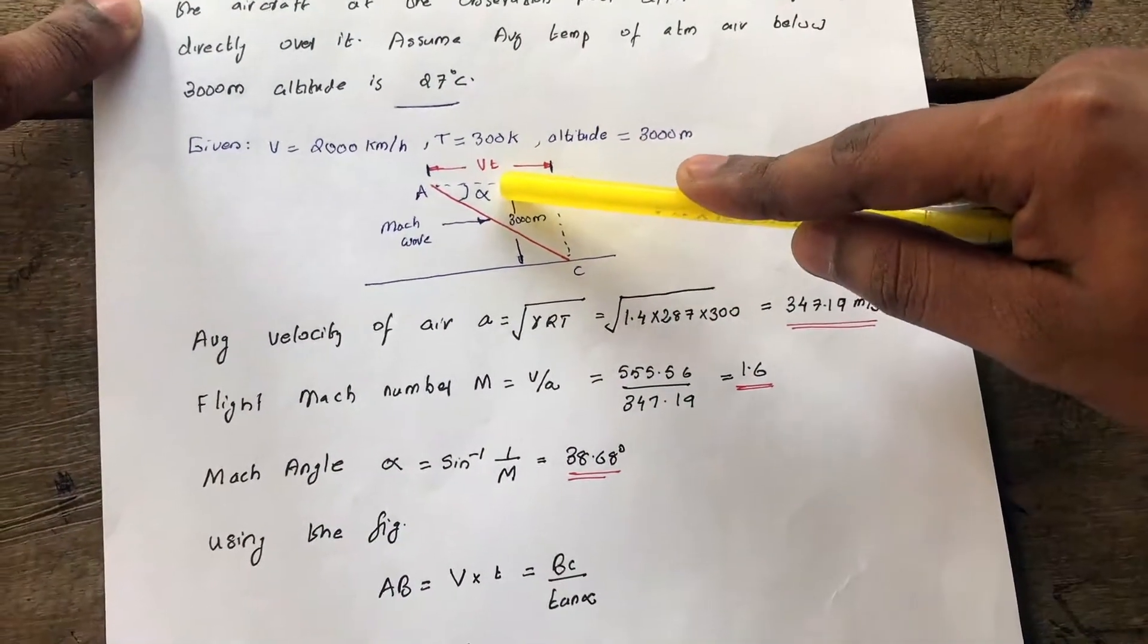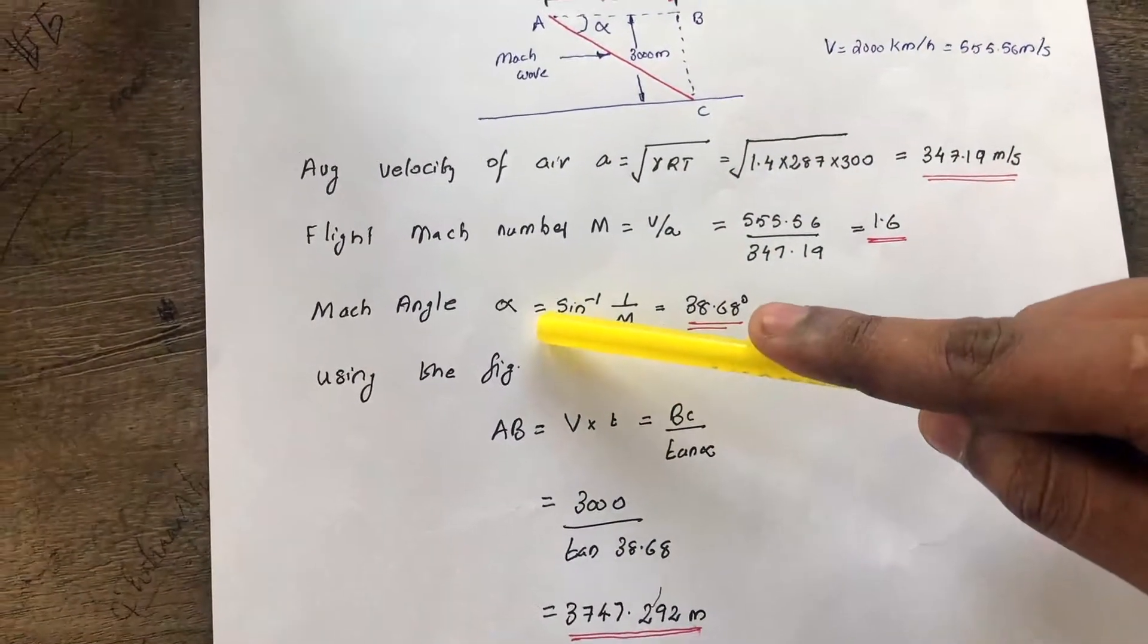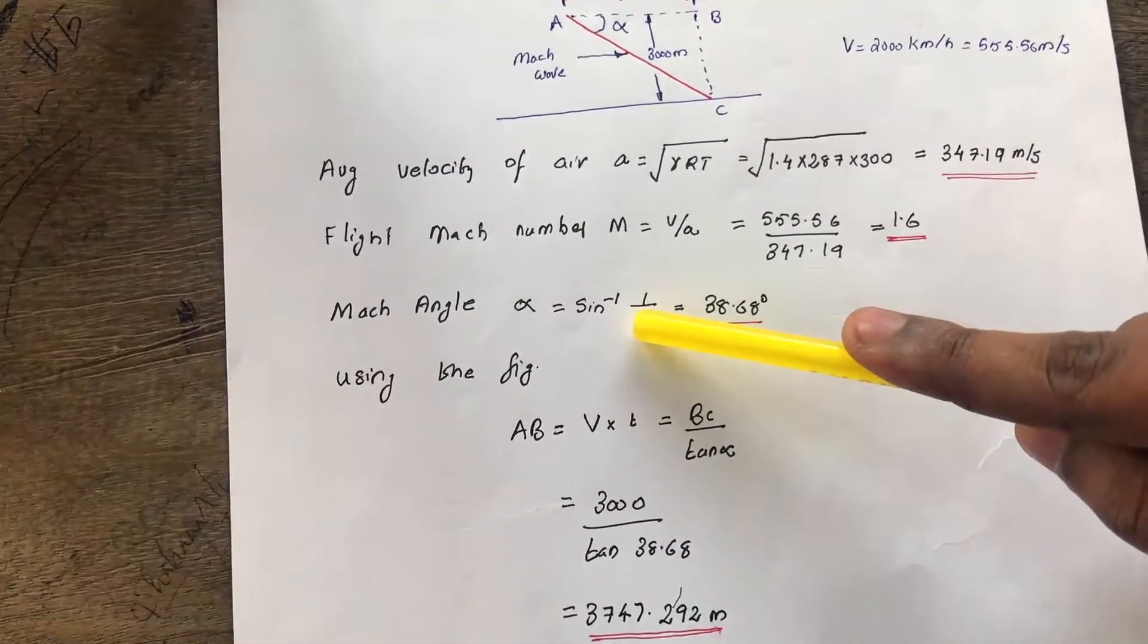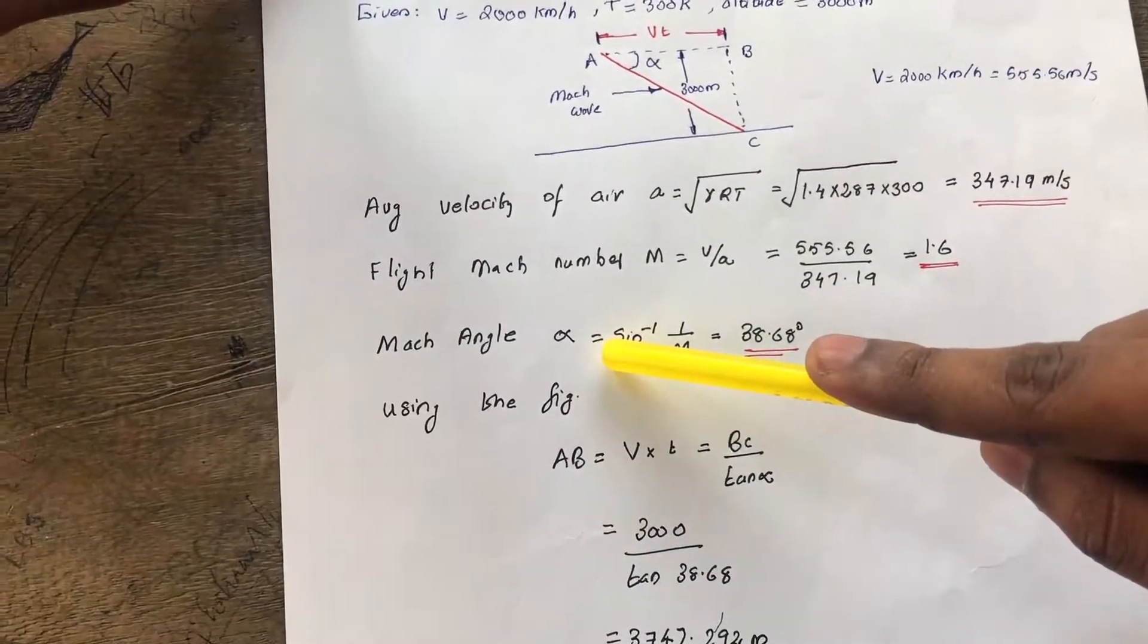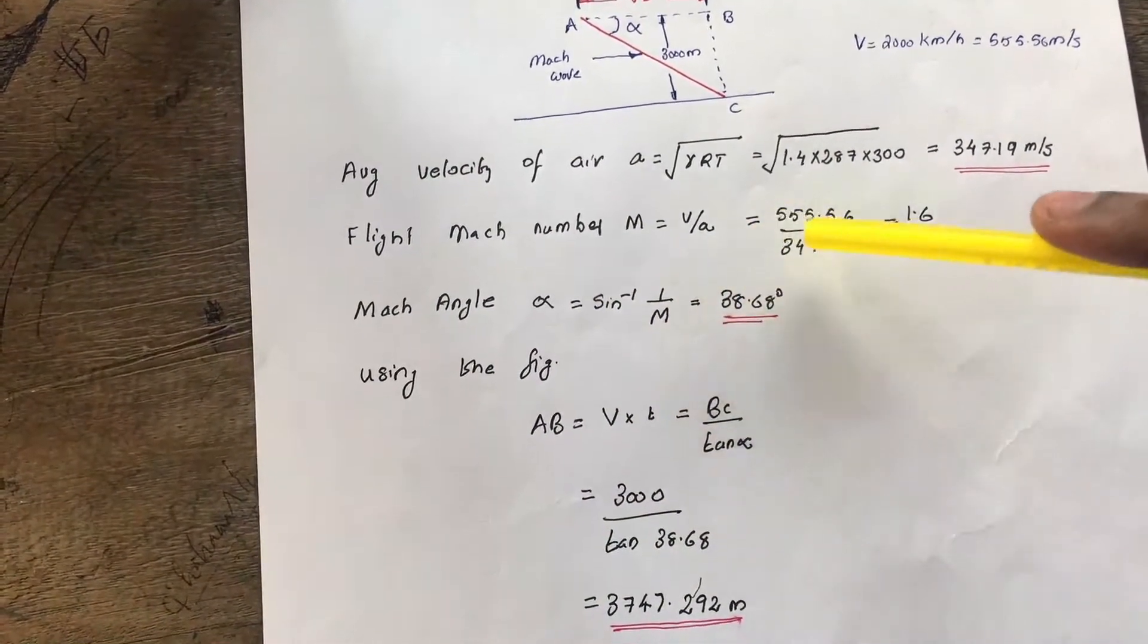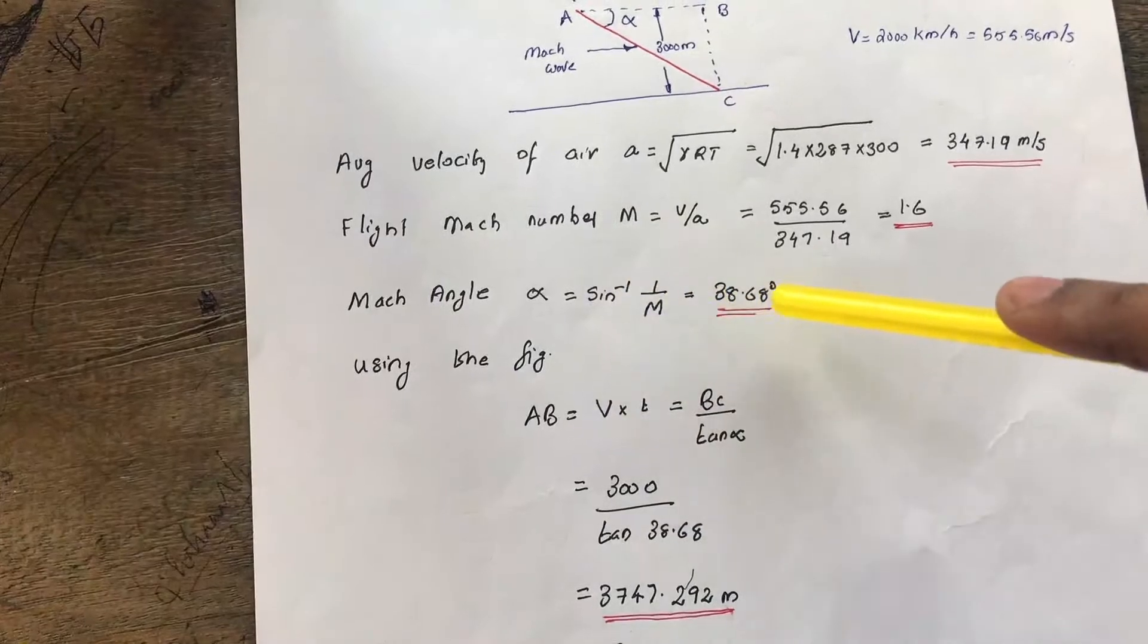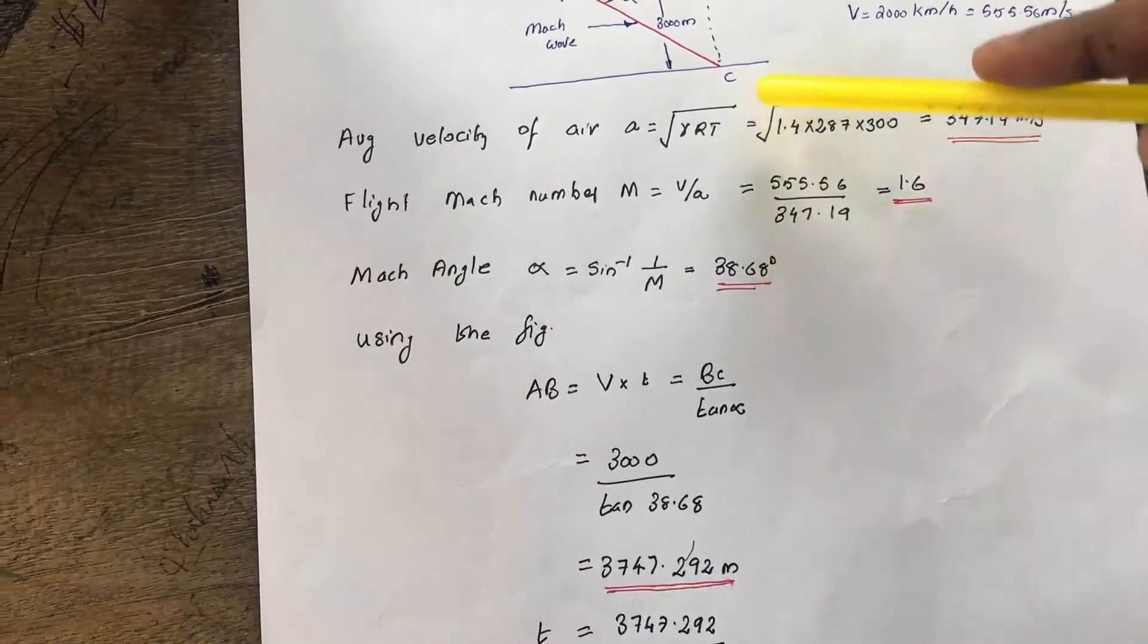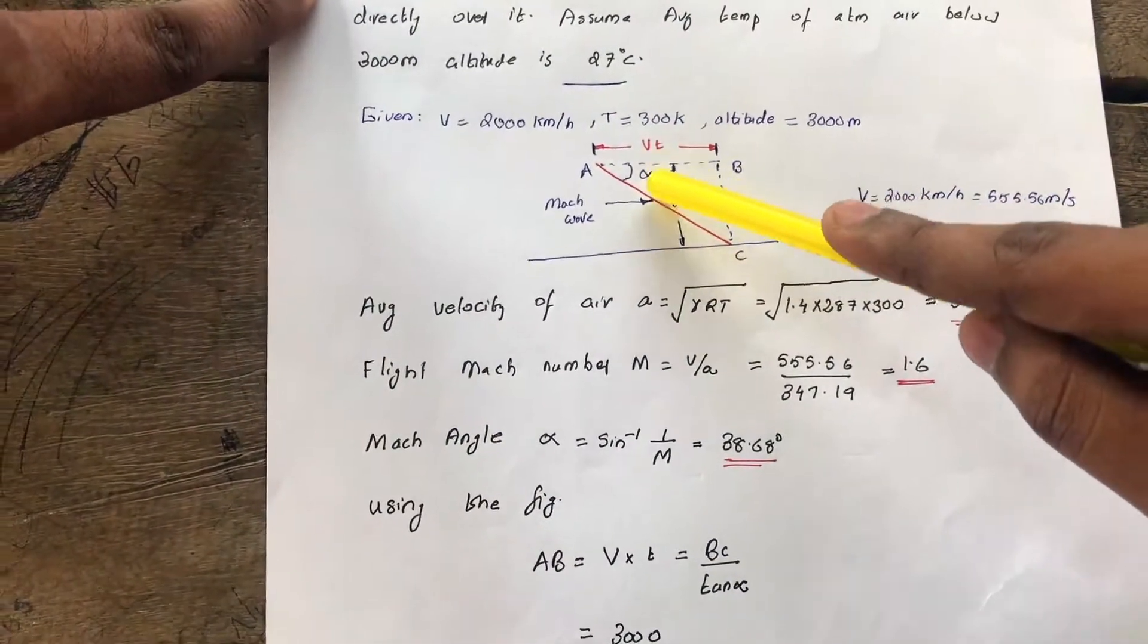We know Mach angle equals alpha. Sin alpha equals 1 by M, or alpha equals sin inverse 1 by M. We know the value of M, so we can find the angle as 38.68 degrees.